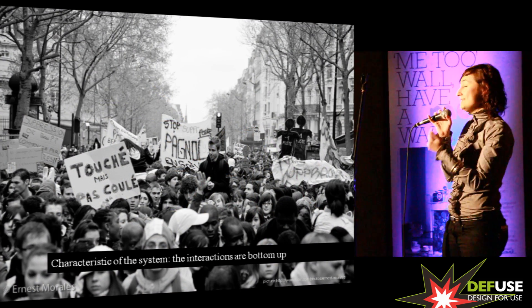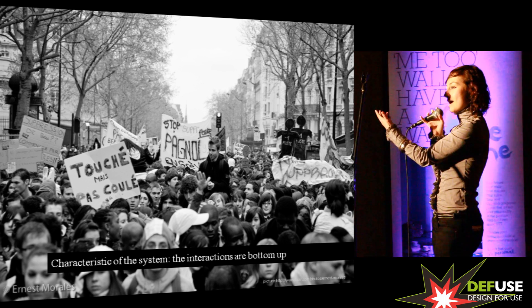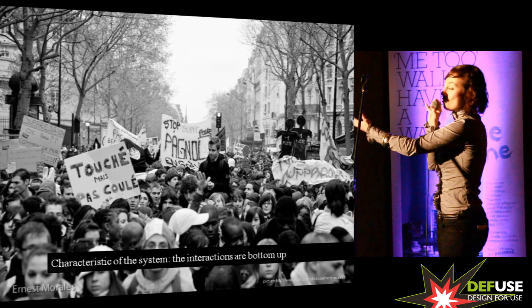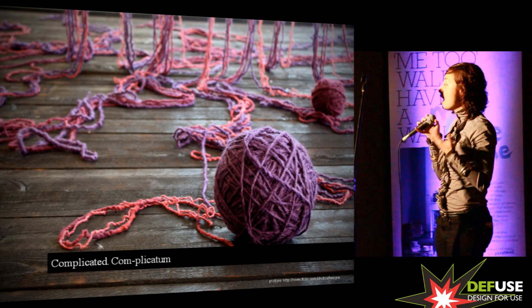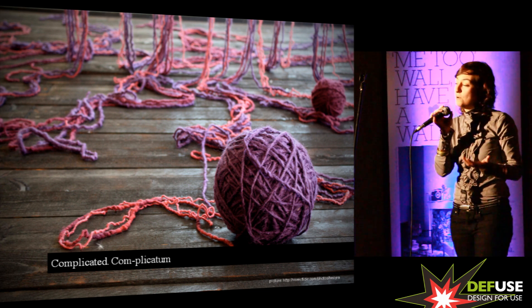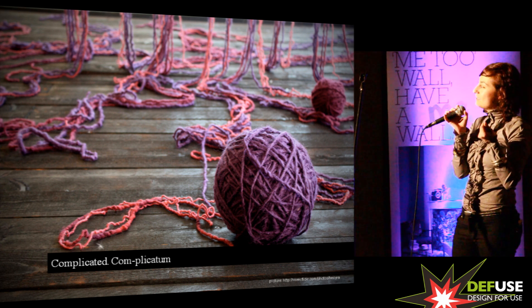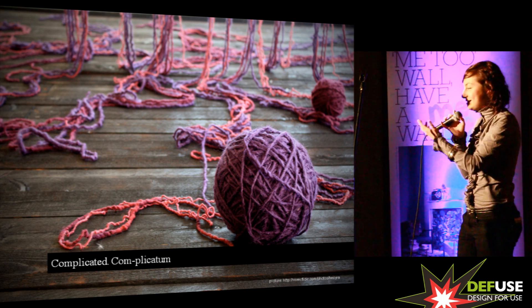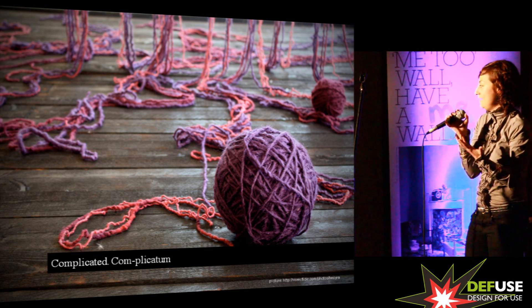And the interactions are always bottom-up. Take this picture: all the people are against something, they go into the street, and they become a crowd. They didn't telephone each other. So we want to explain the difference between complicated and complex, because that is very important. Complicated is something you can take apart and reveal. It's complicated, but it's not more than the sum of its single component parts. The key here is emergence and interaction.